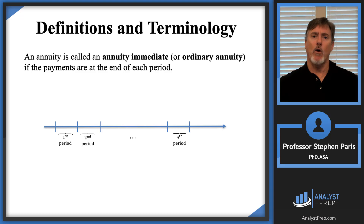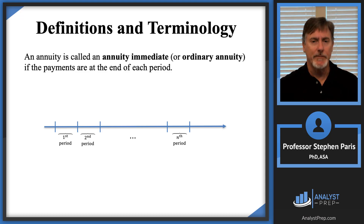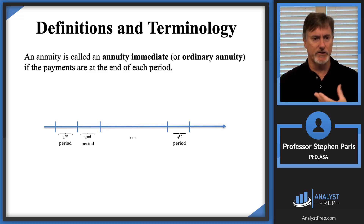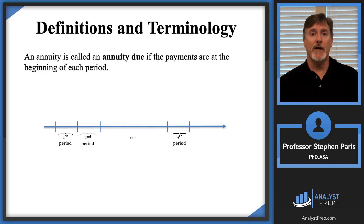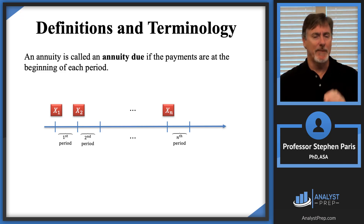An annuity is called an annuity immediate — also called an ordinary annuity — if the payments are at the end of each period. So the first payment is at the end of the first period, the second at the end of the second period, and the nth payment at the end of the nth period. On the other hand, an annuity due has payments at the beginning of each period — the first payment at the beginning of the first period, the second at the beginning of the second period, and so forth.